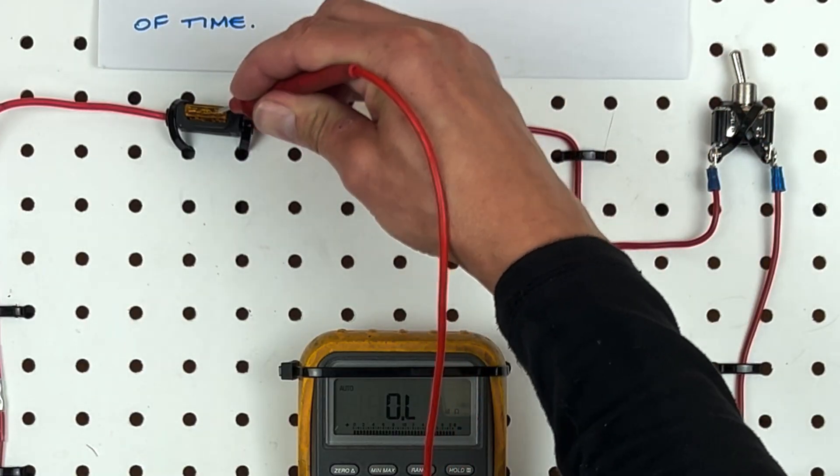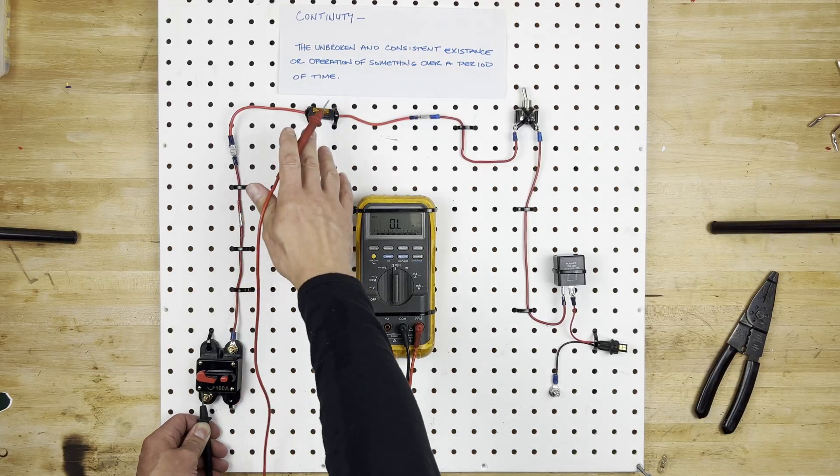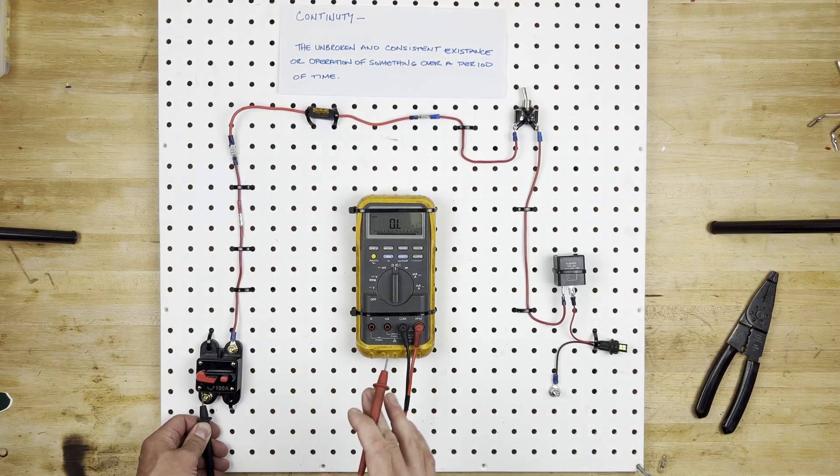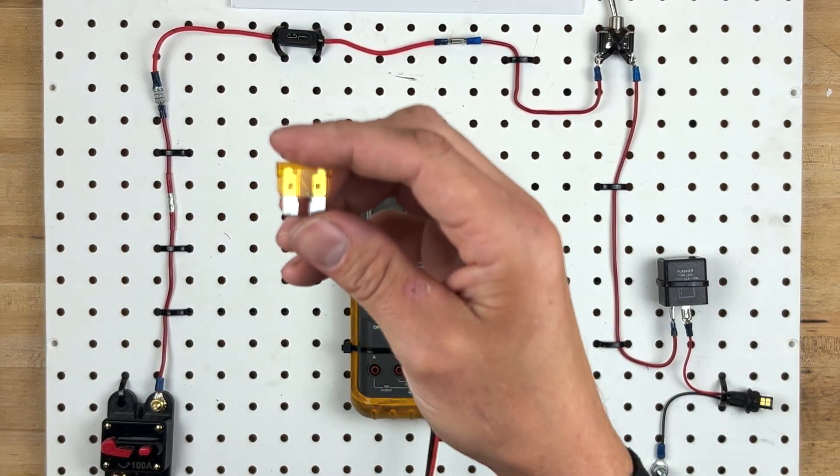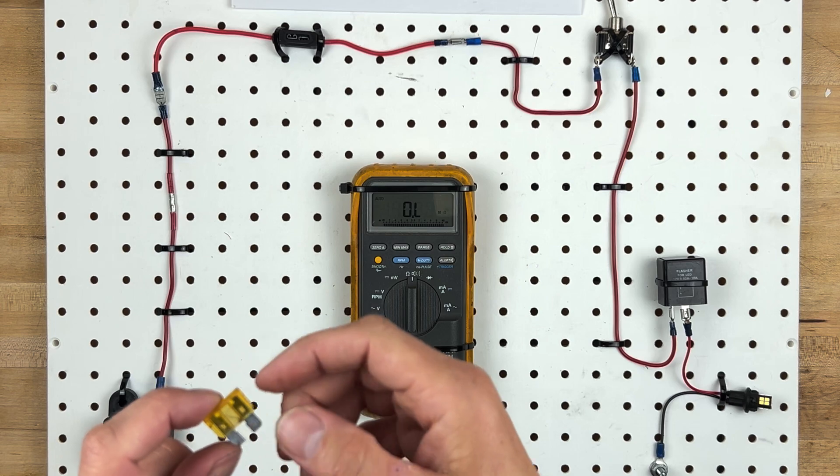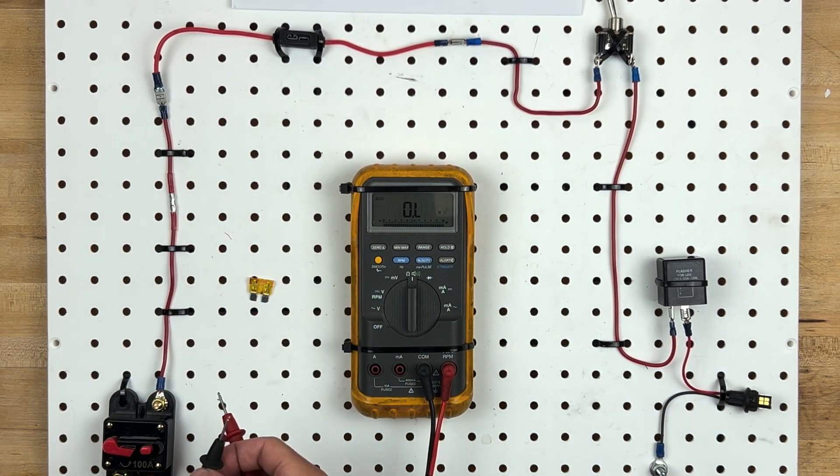So now let's check the other side of the fuse. We've got nothing. Nothing there either. So at this point, we can assume that this fuse is probably not working, but let's take a closer look. And right away you can see a burn mark in it, and that is a sure sign that it's a popped fuse, but we'll prove it out.